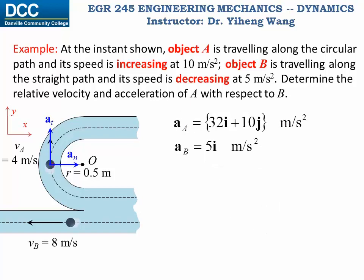Therefore, these two absolute accelerations are both written in vector form. We can apply the equation for relative acceleration. The acceleration of A relative to B equals AA minus AB, again pay attention to the order of the subscripts.